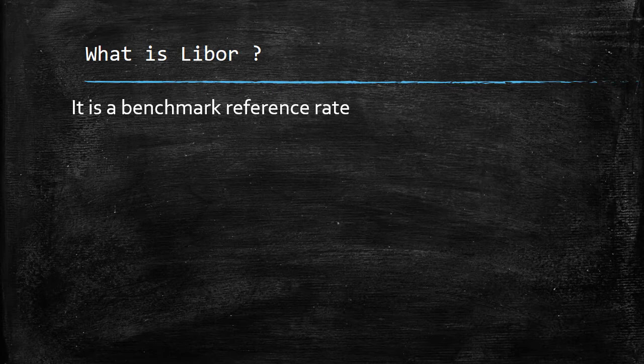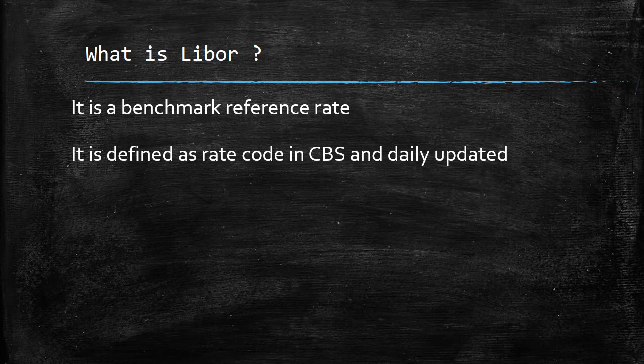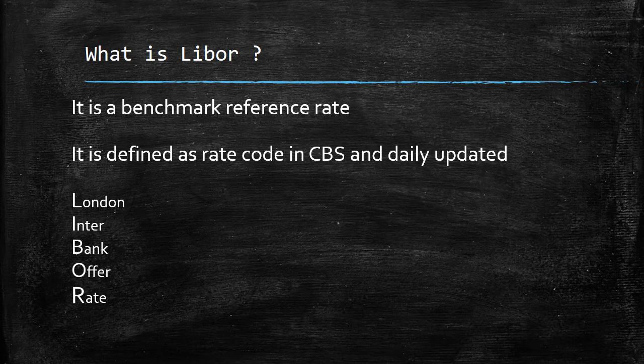Once defined, the rate is set as a rate code in the core banking system, and based on the underlying rate code, the loan schedules are calculated. The full form — LIBOR stands for London Interbank Offered Rate. It was formalized way back in 1986 after a series of discussions. So let us try to understand how exactly LIBOR is calculated.